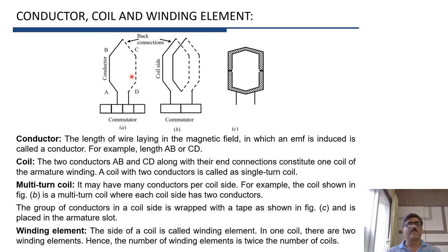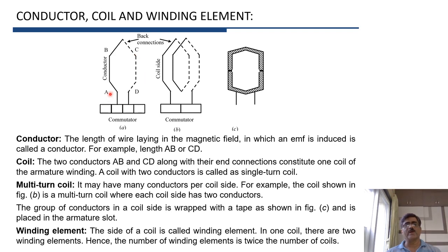The number of winding elements is two times the number of coils, because one coil is made up of two winding elements. We have studied four important terms: conductor (A, B, C, D), coil — which is formed by two coil sides with their end connections — coil can be single-turn or multi-turn, and winding element. In every coil, there are two winding elements.